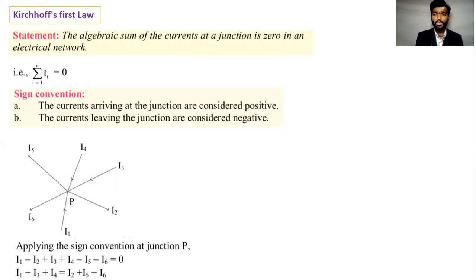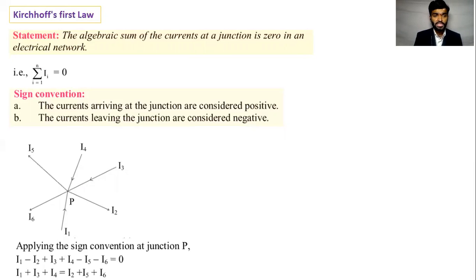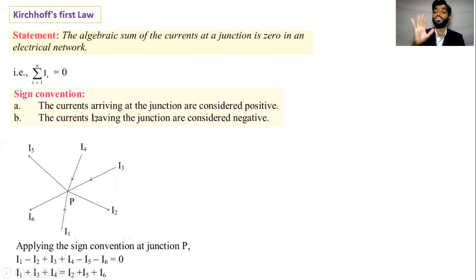We are going to find Kirchhoff's Law. What happens when the algebraic sum of currents is equal to zero? In this we apply the sign convention, which we use to verify Kirchhoff's Law.